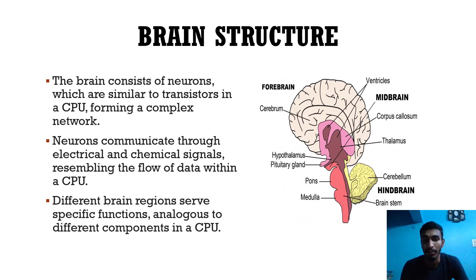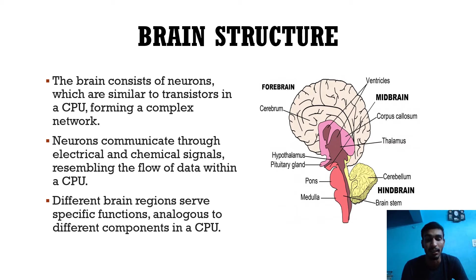The structure of the brain: it consists of neurons, which are similar to transistors in a CPU, forming a complex network. Neurons communicate through electrical and chemical signals, resembling the flow of data between components of a CPU. Different brain regions serve specific functions, analogous to different components in a CPU.